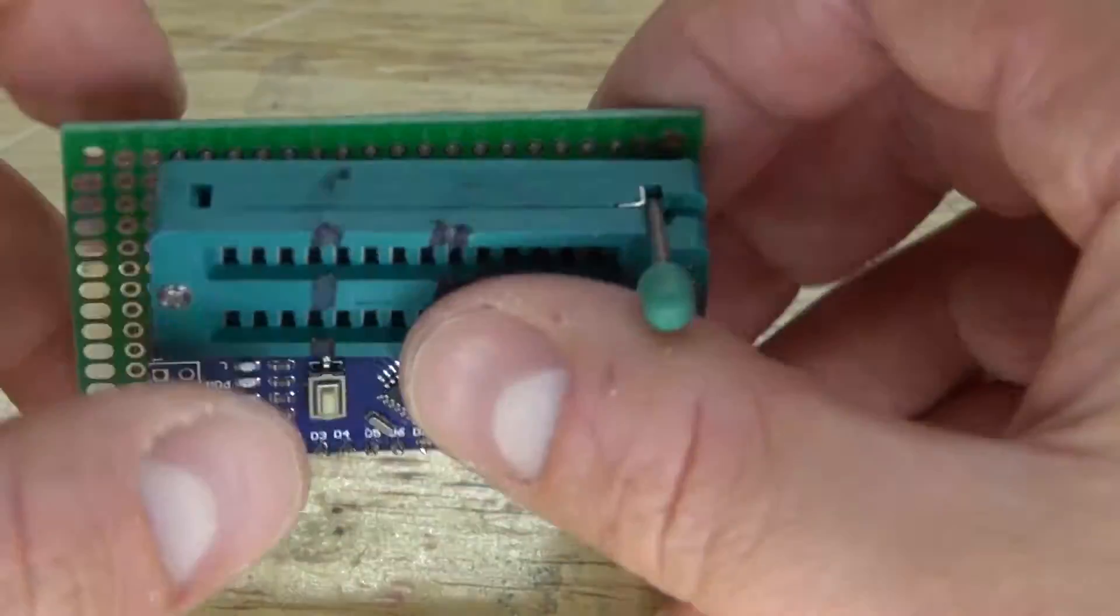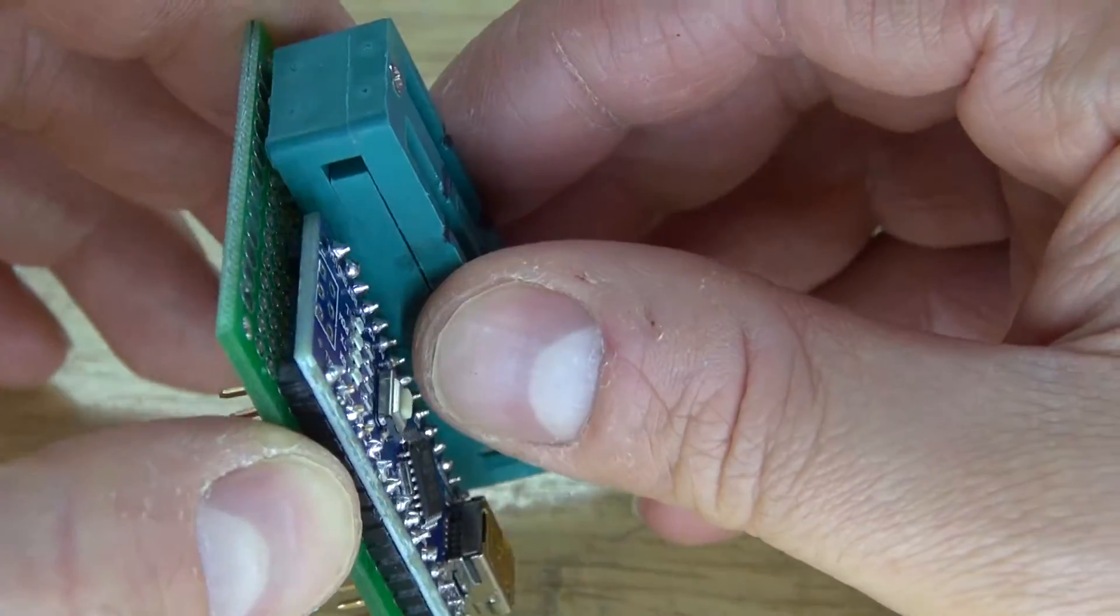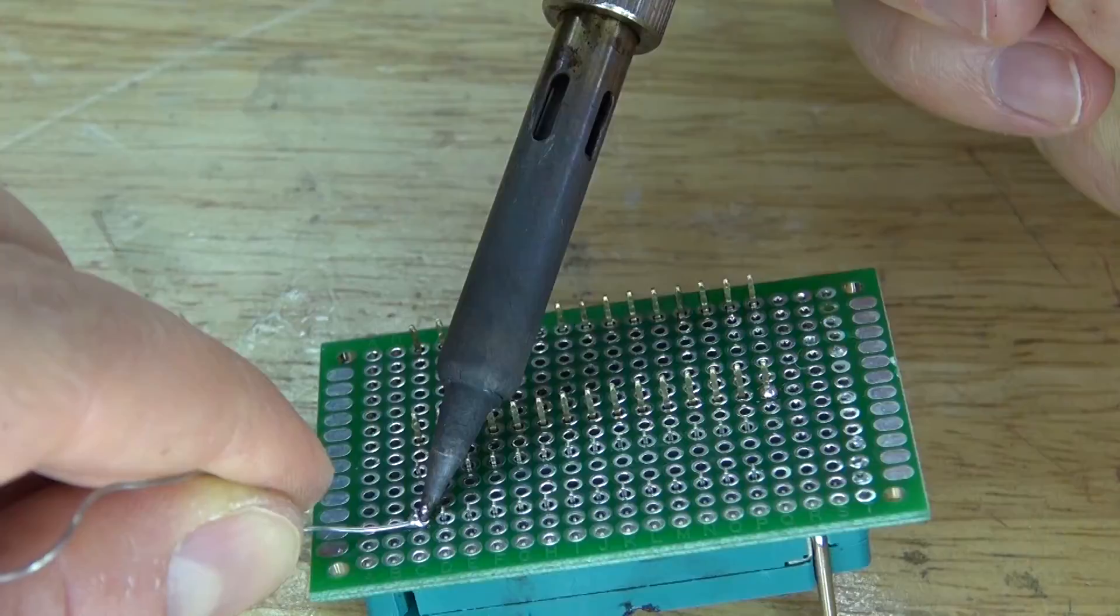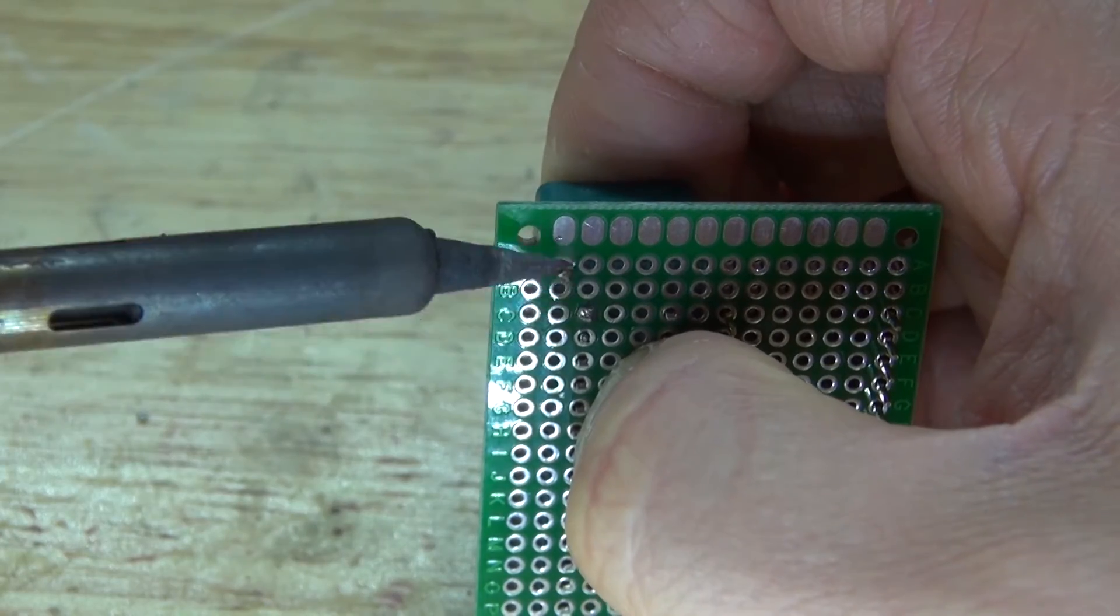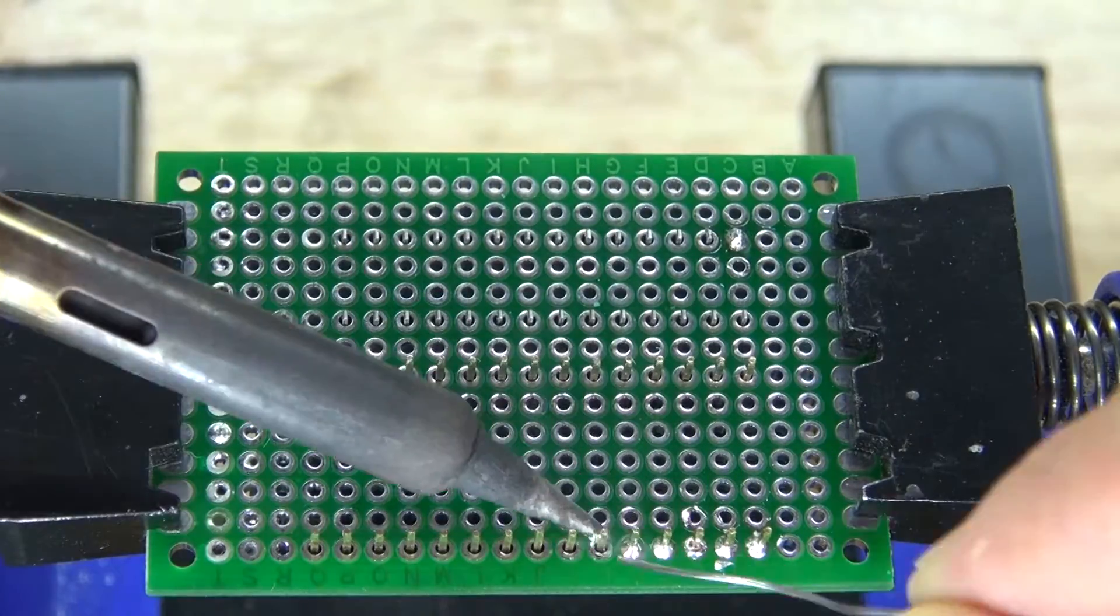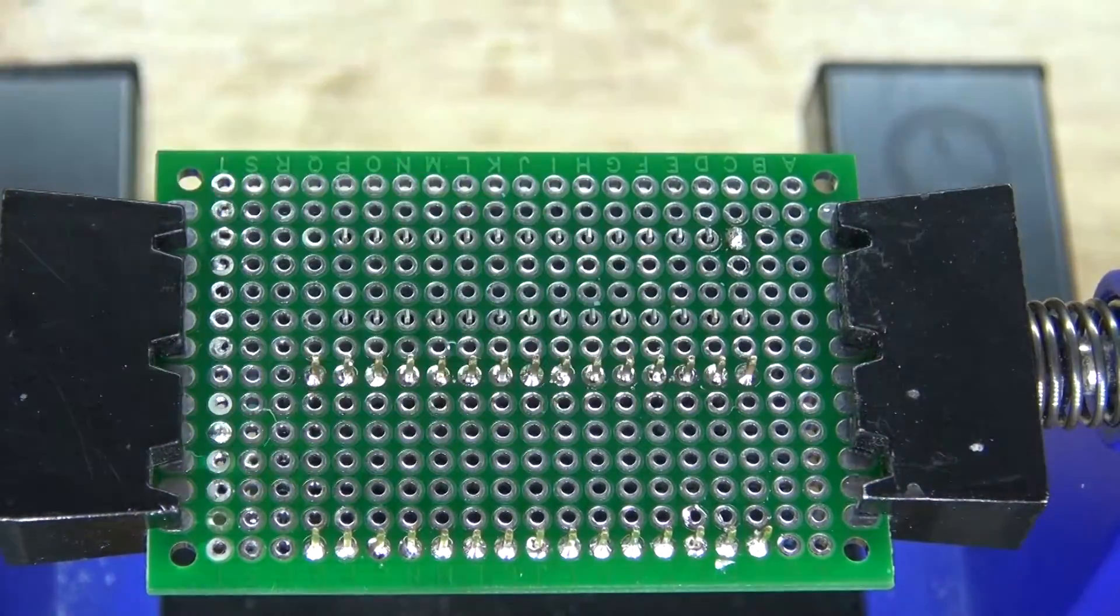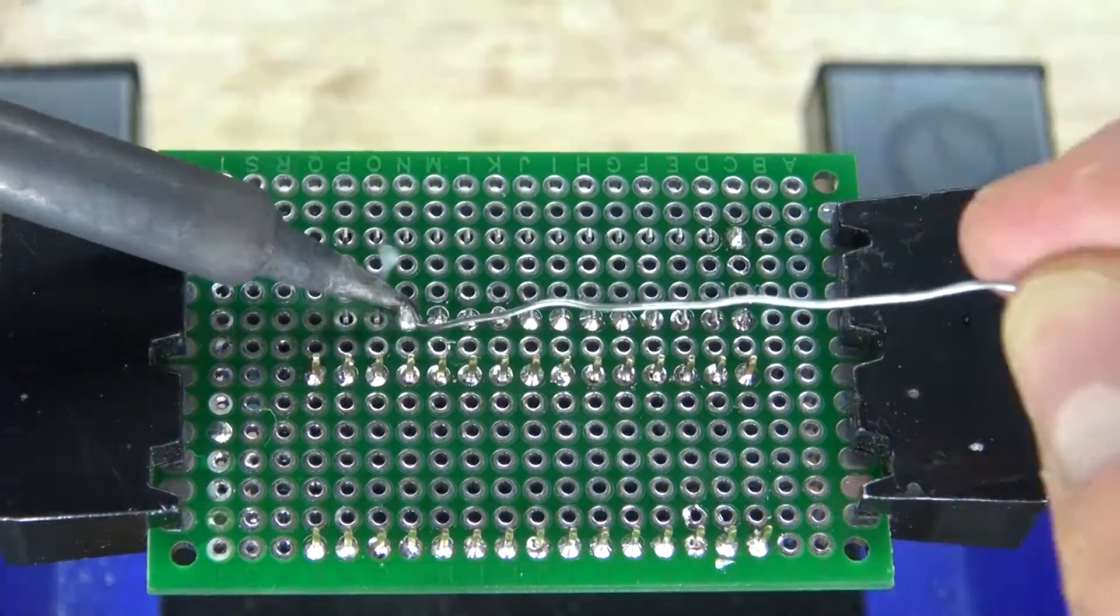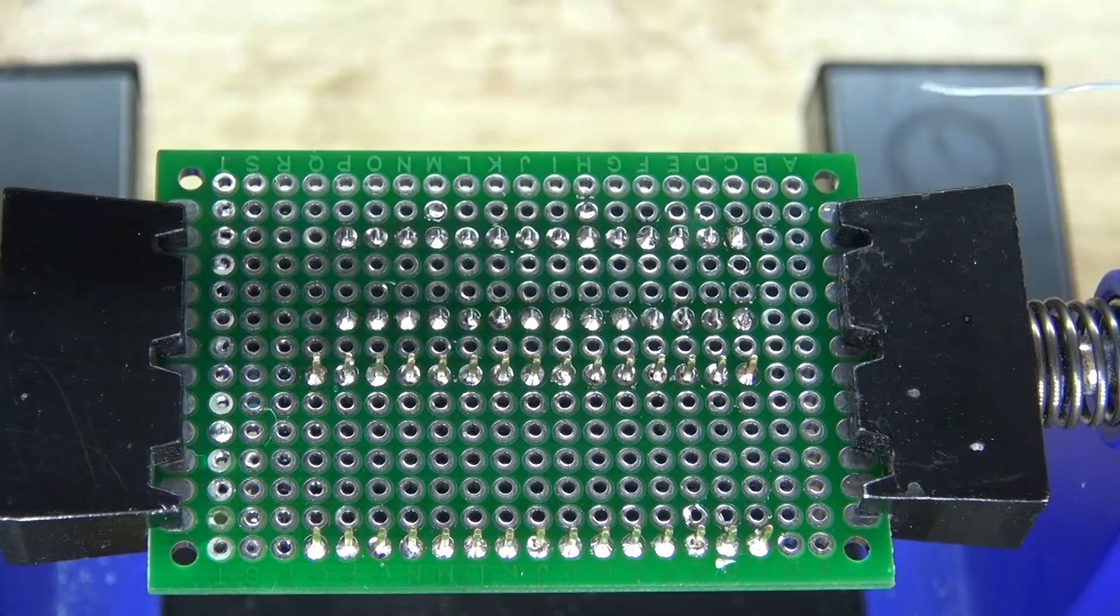Next, I take the socket holder and place it into the perfboard. Solder in one pin and then remelt it by pushing the socket holder in place, so that way it's more flush with the perfboard. Next, I'm going to solder in all of the pins in place. And there we go, it should look just like this.